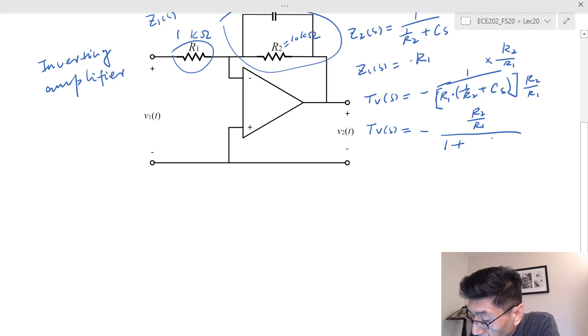I also want to get s over something, so in that case that's 1 plus s over 1/(R2×C). We recognize that R2 times C is the time constant tau.